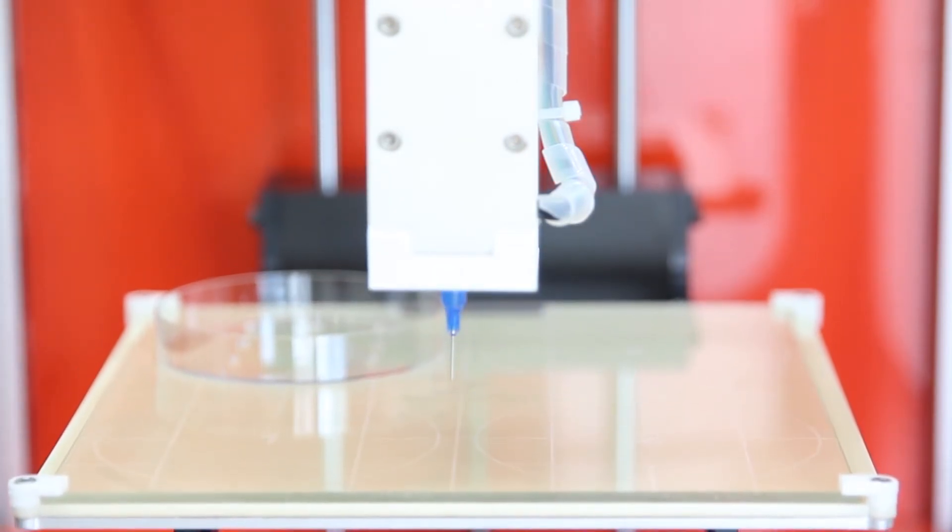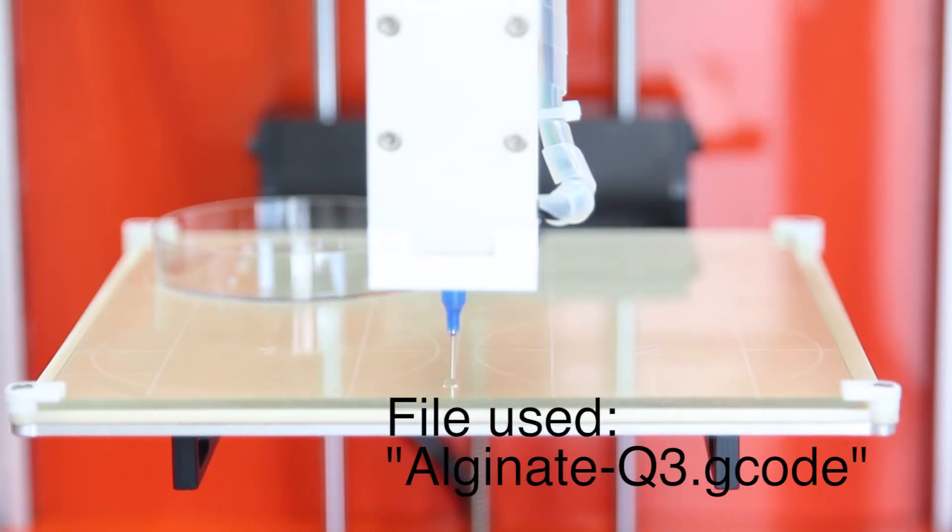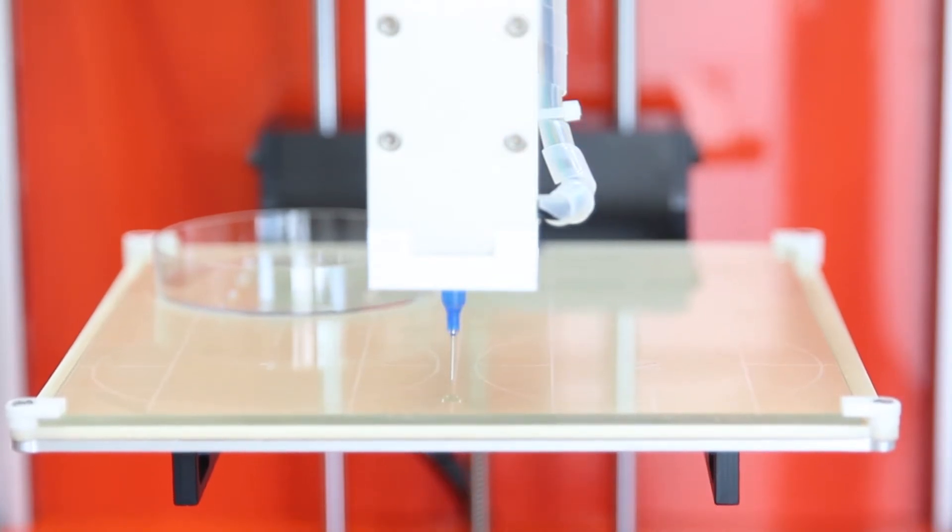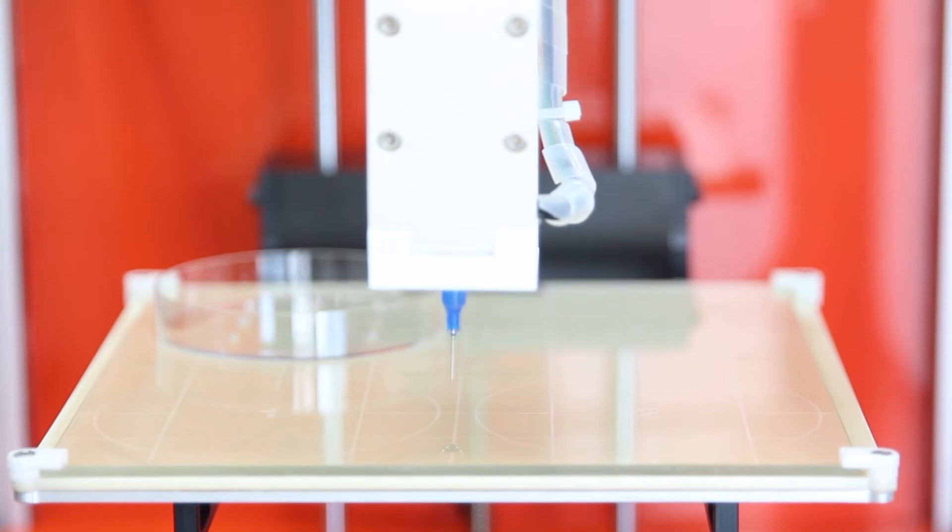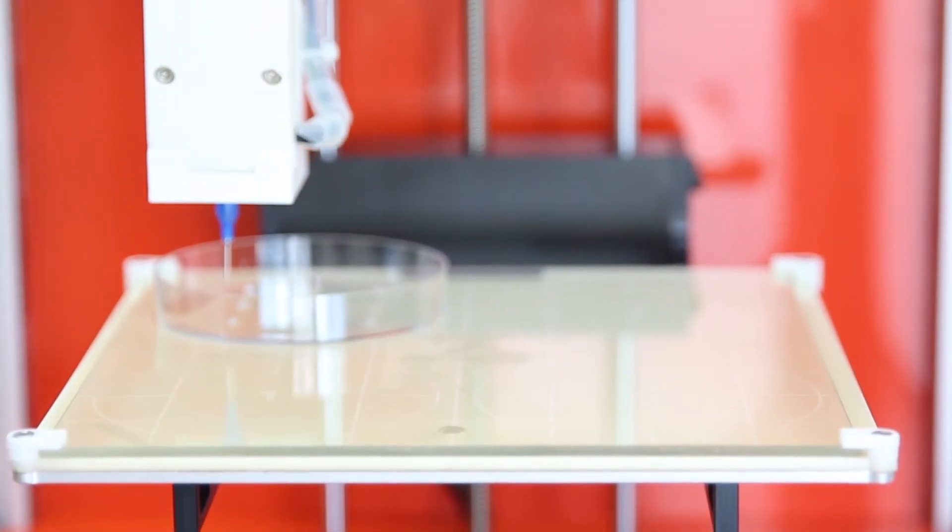Once you have done this, load your alginate g-code file and print. This will again start with the priming step, and print in the same locations as the previous 3x3 array.